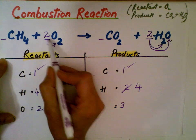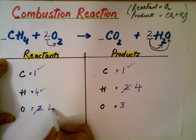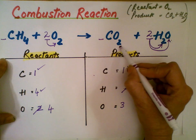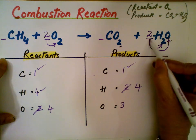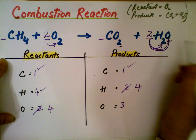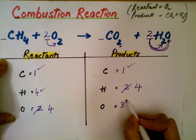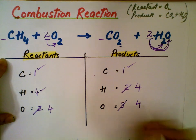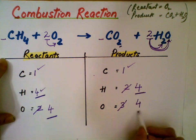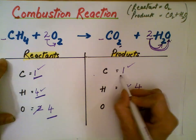And oxygen: 2 times 2 is 4 on the left side. On the right side, 2 from H2O and then 2 times 1 is 2, so 2 plus 2 gives 4 here. So finally, everything is balanced: carbon 1 and 1, hydrogen 4 and 4, oxygen 4 and 4.